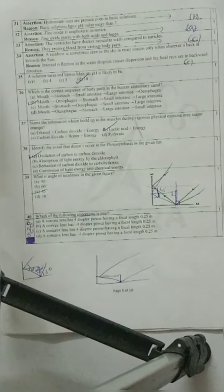Question 34: Assertion - A rainbow is sometimes seen in the sky in rainy season only when observer's back is towards the sun. Yes, assertion is true. Reason - Internal reflection in the water droplets causes dispersion and the final rays are in backward direction. False. This is not correct.